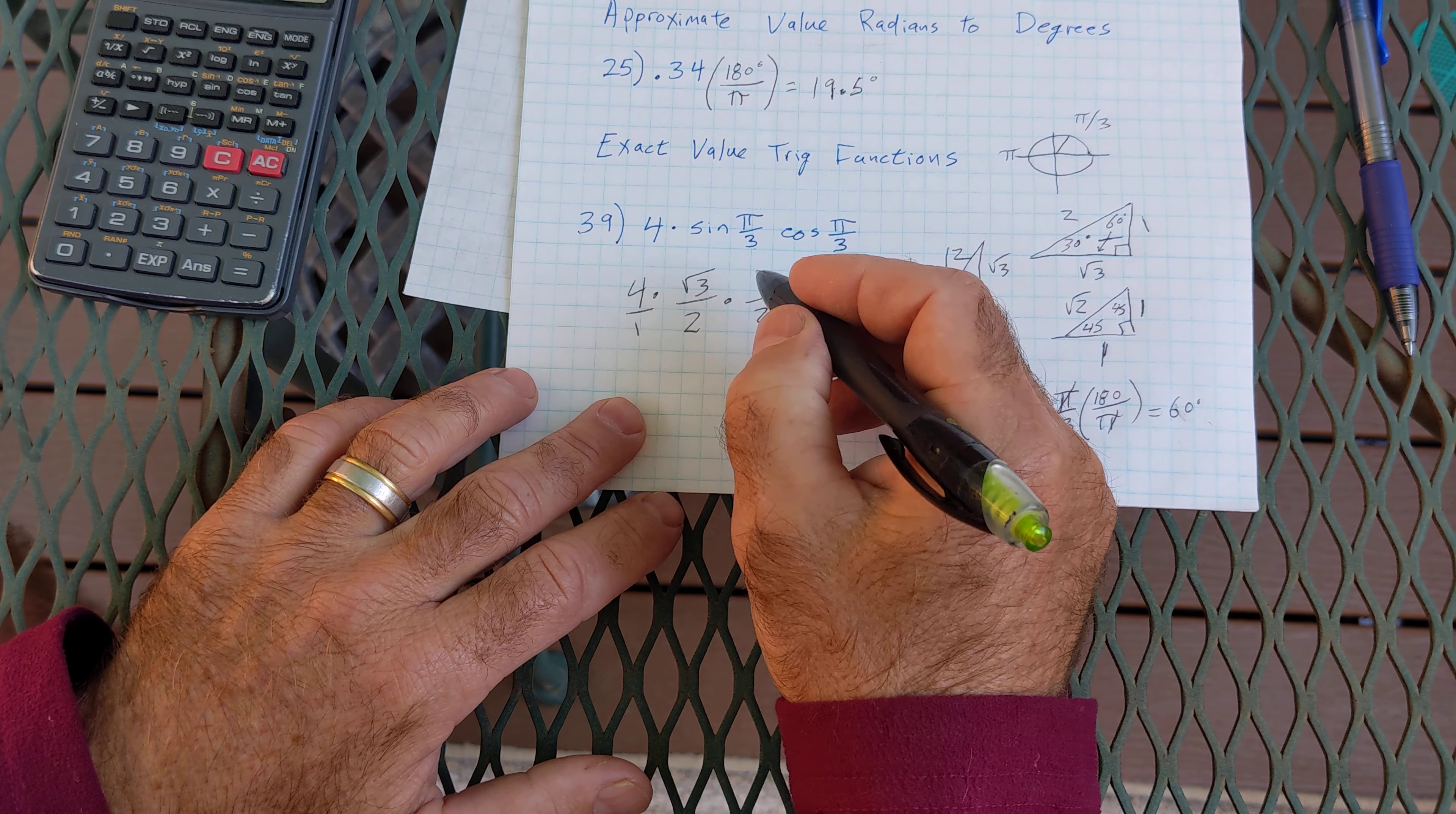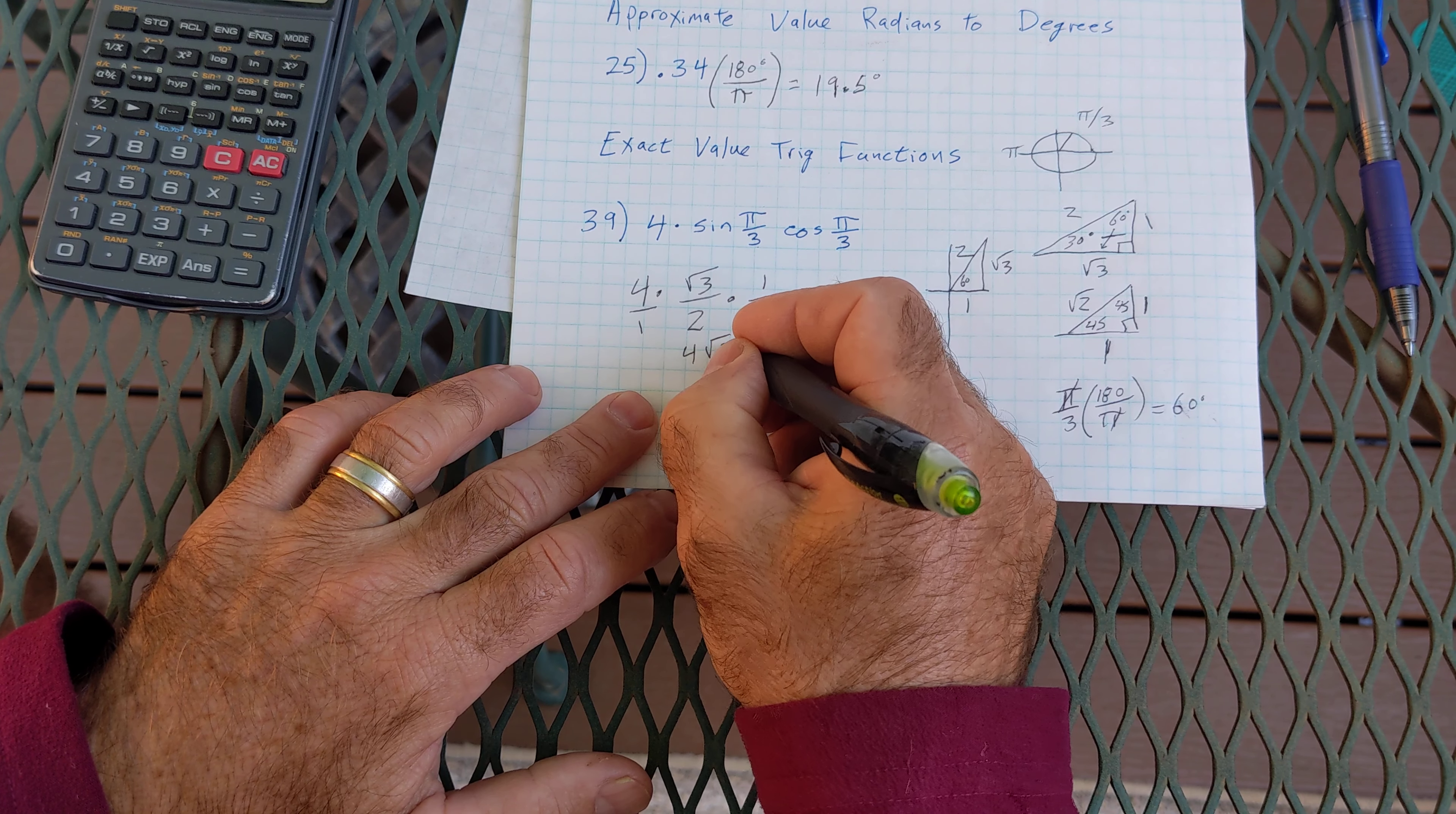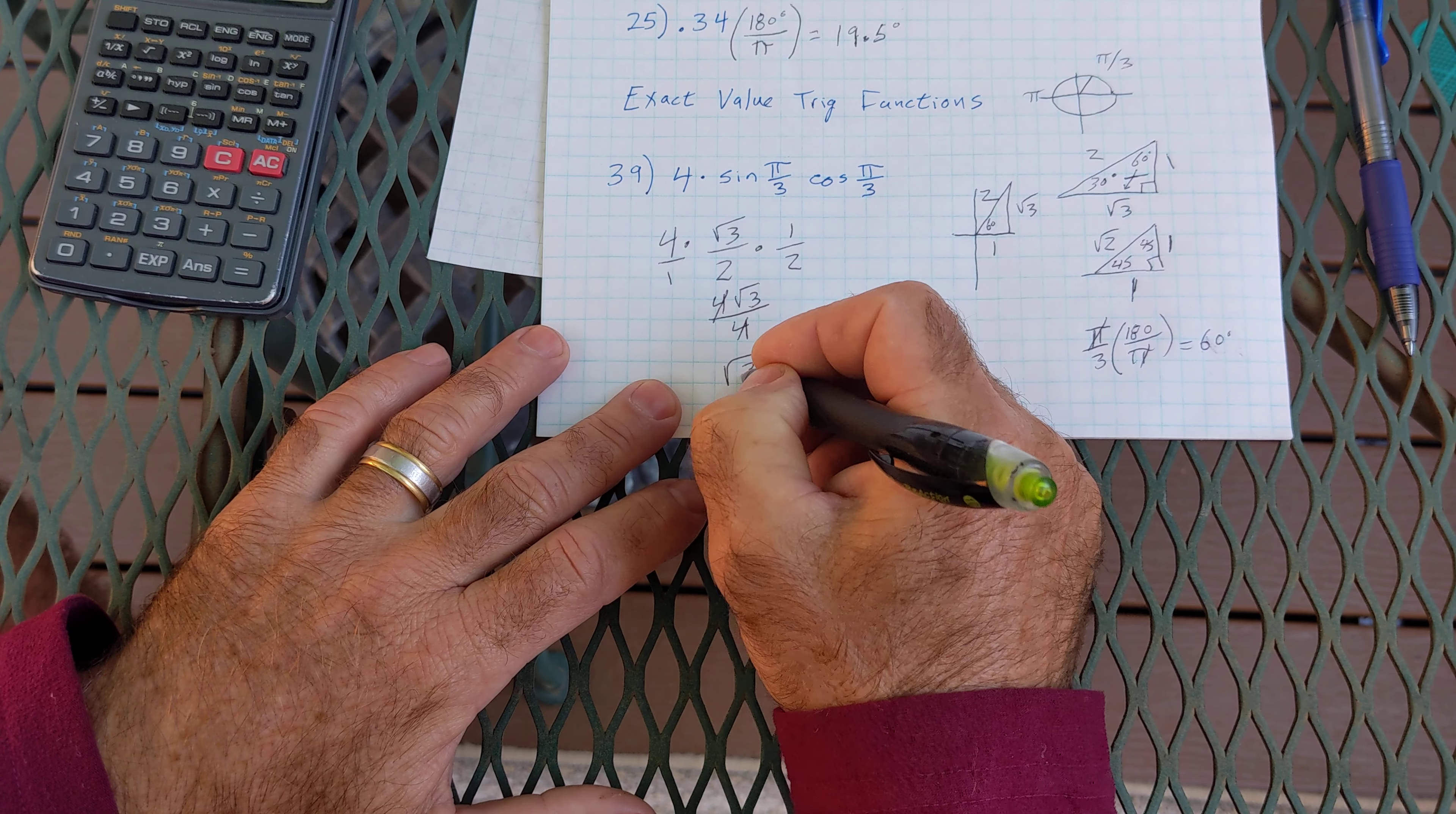4 times root 3 times 1 over 1 times 2 times 2, which is going to be 4 root 3 over 2 times 2, 4. My 4s cancel and my final answer is root 3.